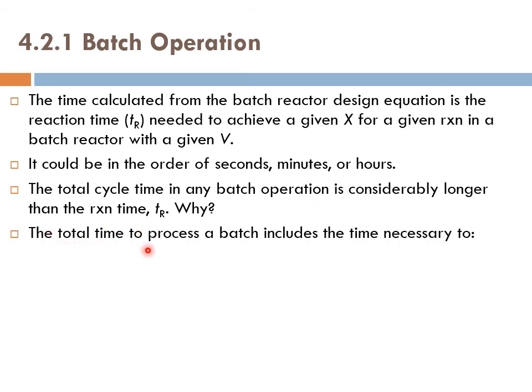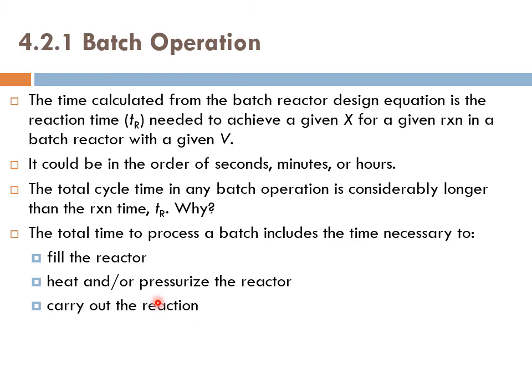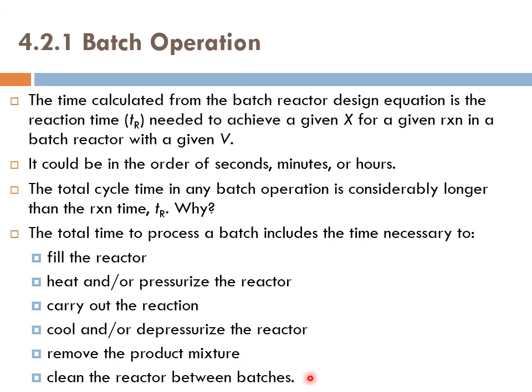Why is that? That's because the total time to process a batch includes the time necessary to fill the reactor. You have to put all the reactants inside the reactor. And also, you need to heat and/or pressurize the reactor to the desired condition. And then you carry out the reaction. And when you carry out the reaction, you carry it out for a time that is known as the reaction time tR. Then, after you finish the reaction, you need to cool down or depressurize the reactor, remove all the products out, and then clean the reactor between the batches. So, you can see that only this step is known as tR. However, if you need a total time of the process, you need to sum up all the times required for each of these steps together.